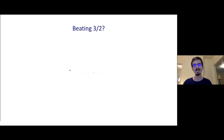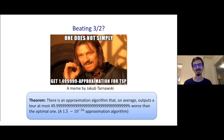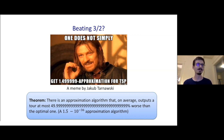We've been stuck on this 50% barrier since the 70s, and I found a meme about this last year. I started thinking about this problem with Anna and Cheyenne two years ago. I'm sad to say we didn't achieve Boromir's goal. However, we did actually beat 50%. We showed that we can get 50% minus a tiny constant — specifically, a 1.5 minus 10 to the negative 36 approximation algorithm. So it's better, but he's still not happy, so we'll have to keep trying.